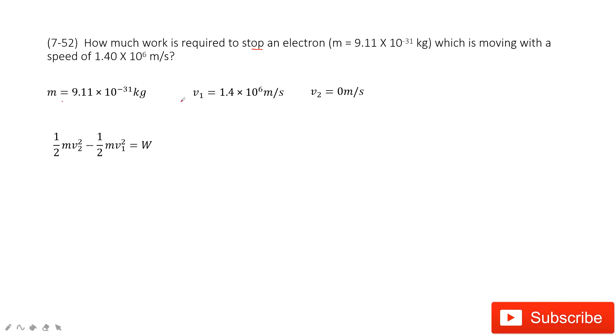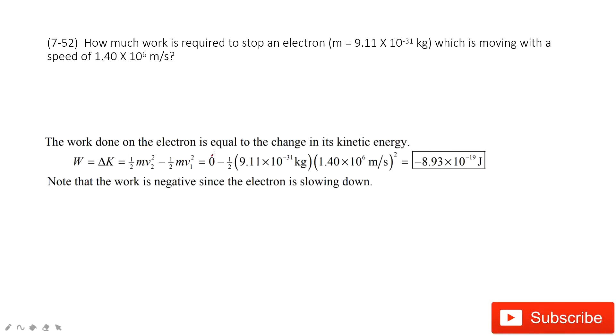This mass, v₁, v₂ is given. So very easily you can find this work W. And it's negative because the electron is slowed down.